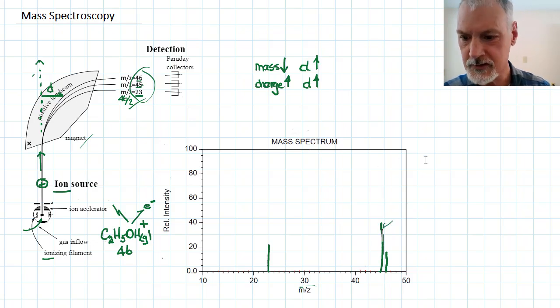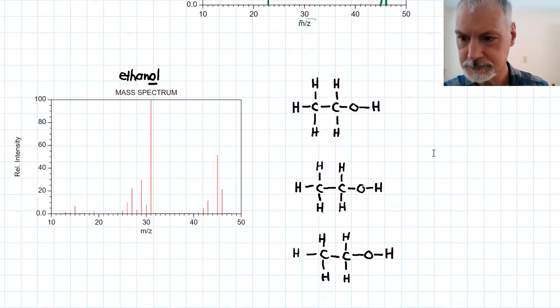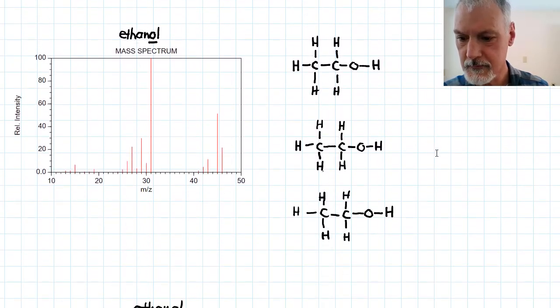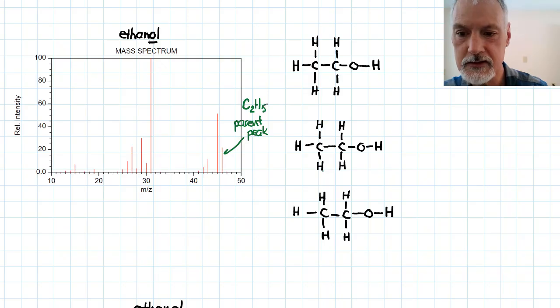Let's look at the actual spectrum of ethanol. Here I have, from a data source, the actual spectrum that's created by ethanol, and the first peak I'd like to address is the one that's furthest over to the right-hand side. This is sometimes called the parent peak. This peak results when the entire molecule goes through without fragmenting. So this one is due to C2H5OH with a positive charge.